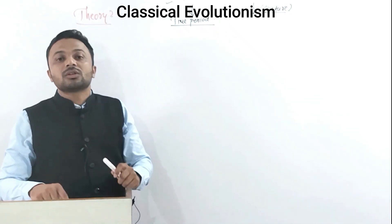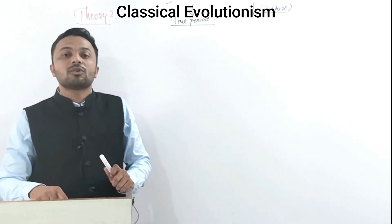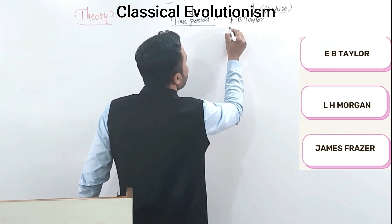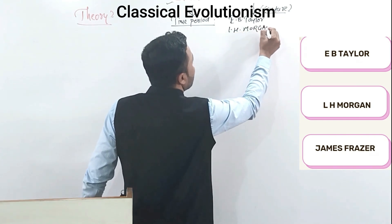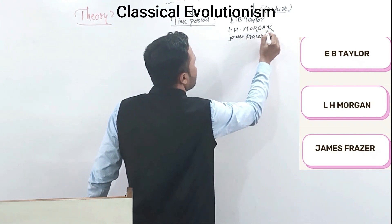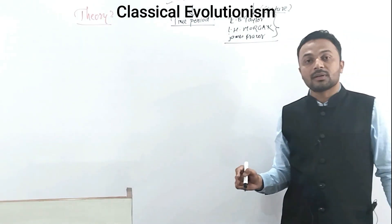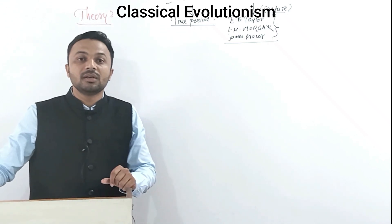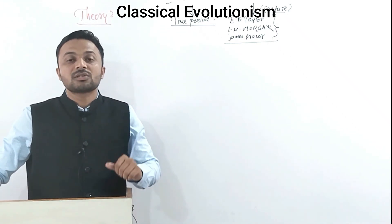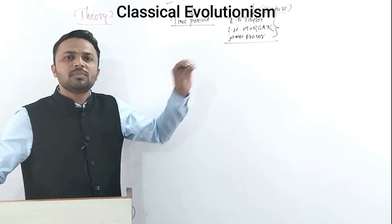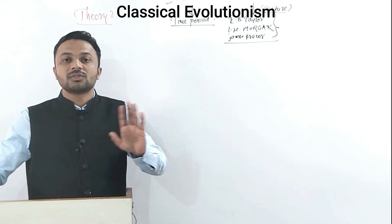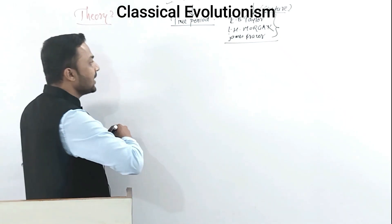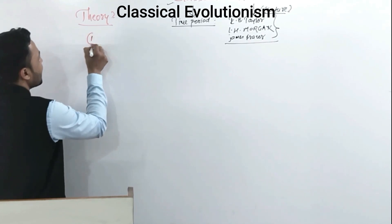In your syllabus three anthropologists are mentioned for classical evolutionism: first is E.B. Tyler, second is Lewis Henry Morgan, and third is James Fraser. You only need to read about these three. Their opinion regarding the evolution of culture is the same — that culture has evolved in the same manner everywhere.